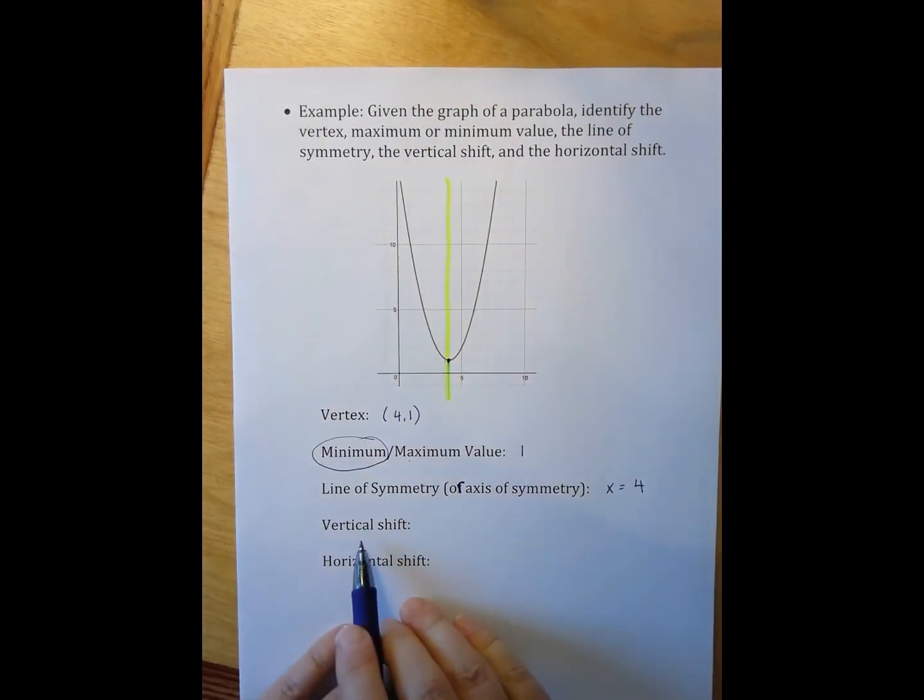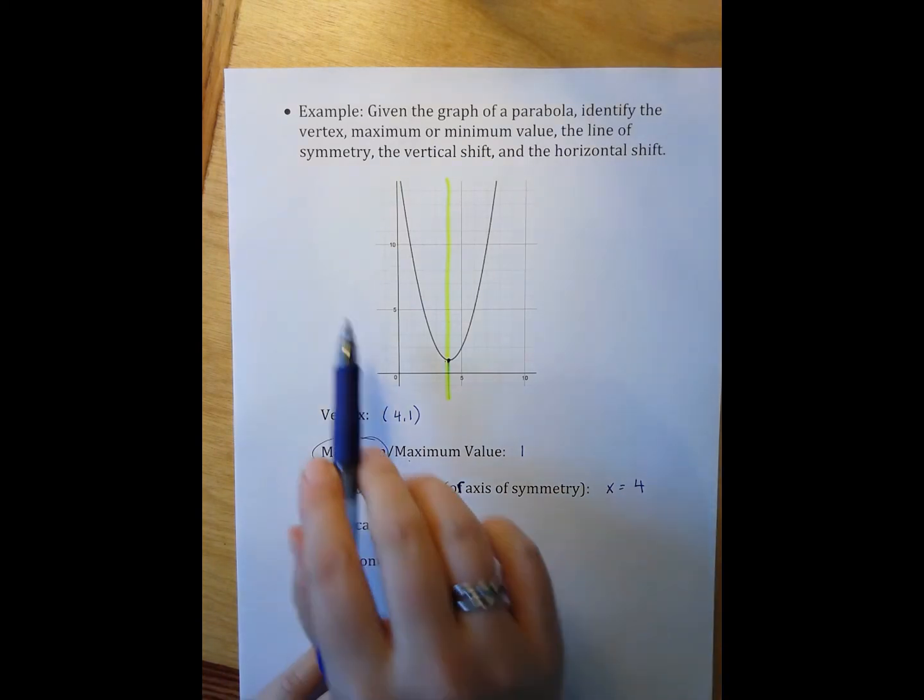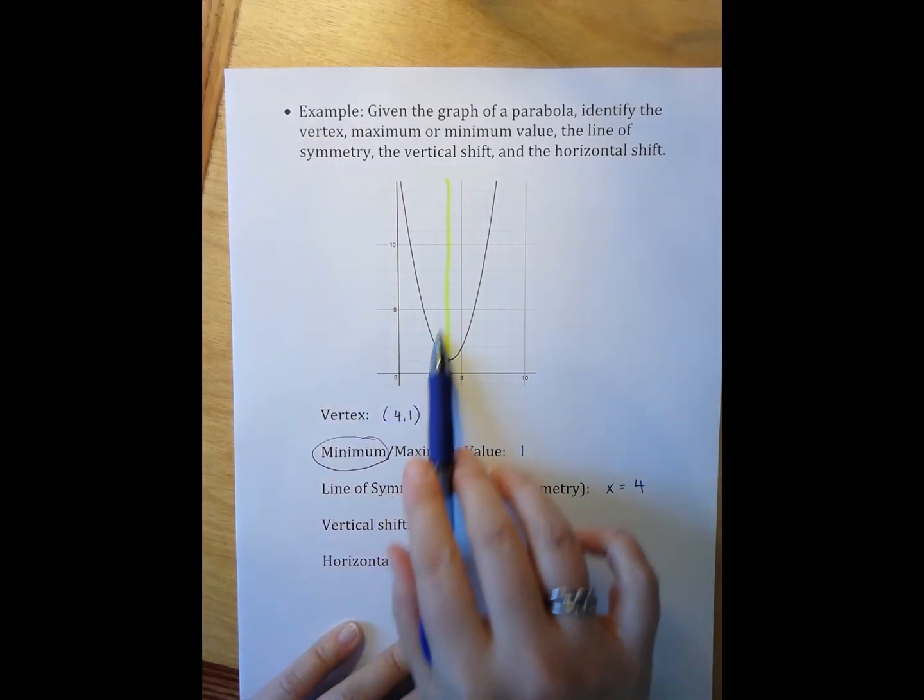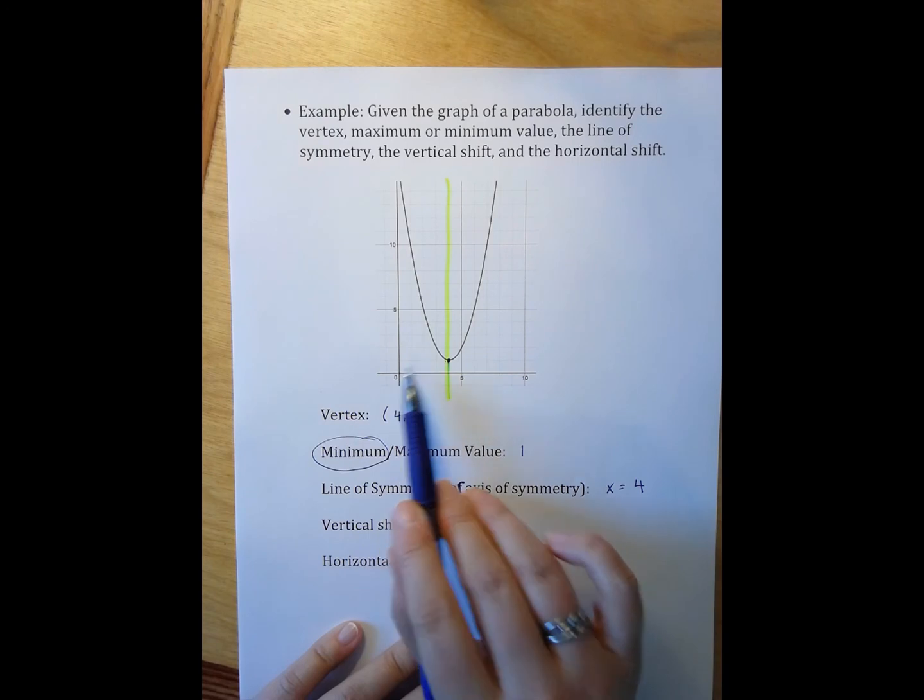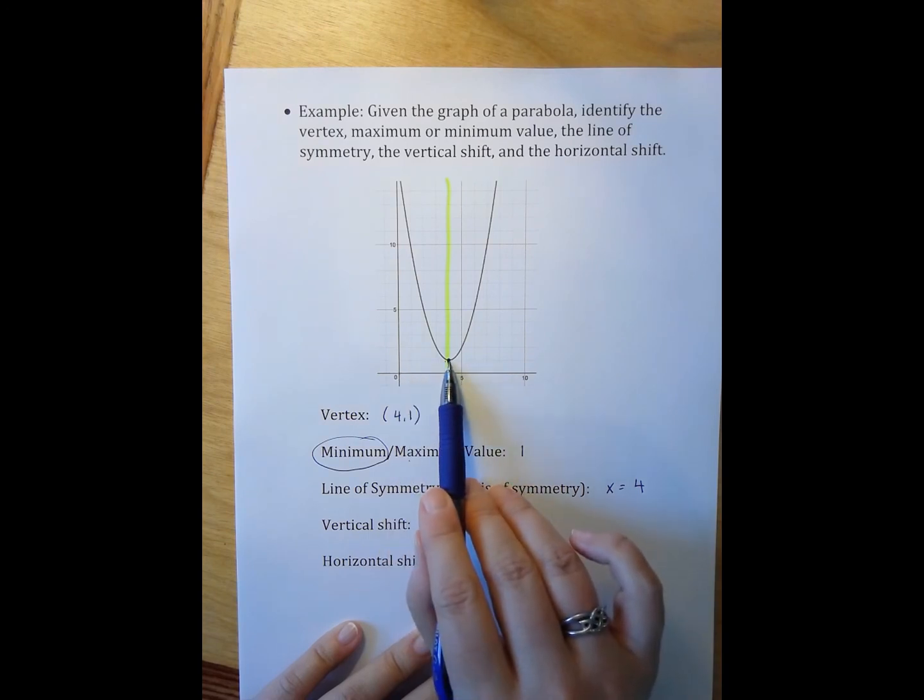Now, my vertical and horizontal shifts, those are how far from the mother function, the parent function, this graph was moved. Now, the mother function, y equals x squared, always goes through zero, zero. So the vertex was at zero, zero, and now it's over here at four comma one.